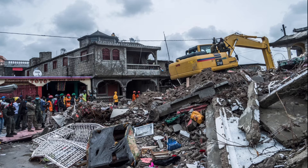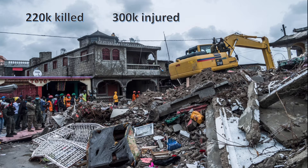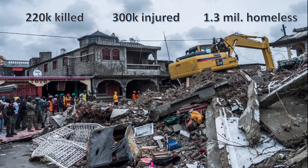The earthquake had some pretty severe impacts: over 220,000 people were killed, another 300,000 were injured, and 1.3 million people were left homeless. We can see from the images that the destruction in a developing country was obviously very significant.